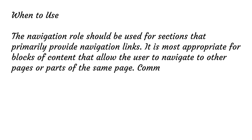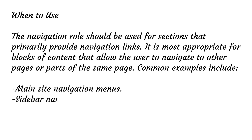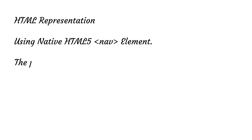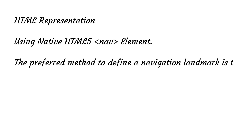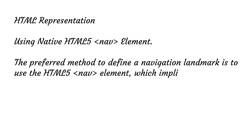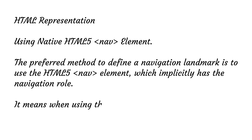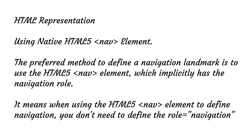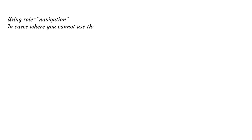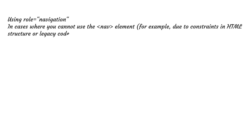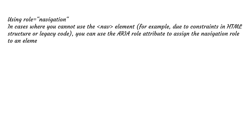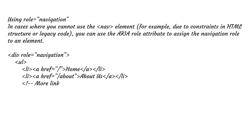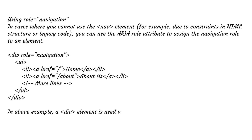Common examples include main site navigation menus, sidebar navigations, and pagination links. HTML representation: The preferred method to define a navigation landmark is to use the HTML5 nav element, which implicitly has the navigation role — meaning you don't need to add role="navigation" explicitly. In cases where you cannot use the nav element, due to constraints in HTML structure or legacy code, you can use the aria role attribute to assign the navigation role. A div element used with role="navigation" indicates a navigation section.